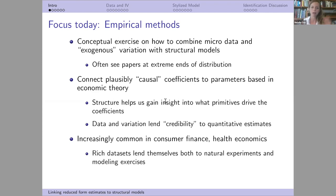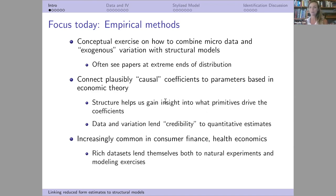What I mean is connecting plausibly causal coefficients from regression analysis to parameters based in economic theory. This has a lot of benefits — it's helpful even if you're doing a purely reduced-form or very structural paper. The structure helps you gain insight into what primitives are driving the coefficients you're estimating, while the data and variation will lend more credibility to the quantitative estimates coming out of a model, letting you argue they come from specific variation in the data rather than an omitted variable.